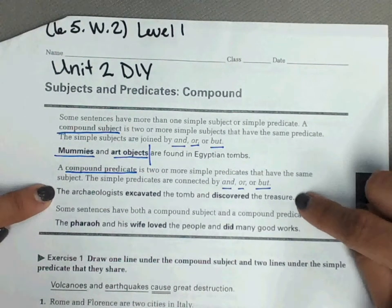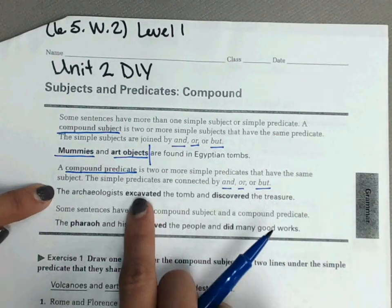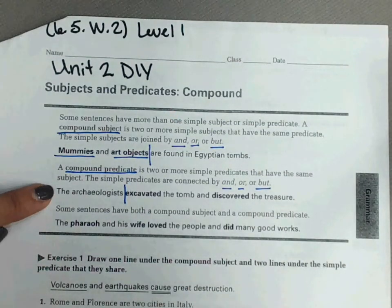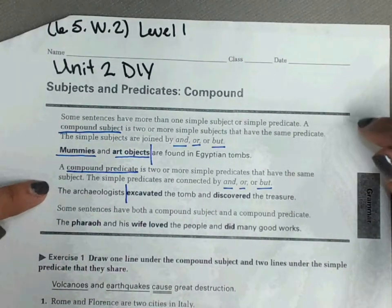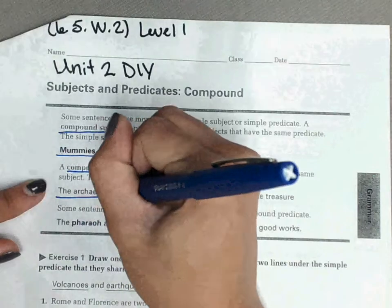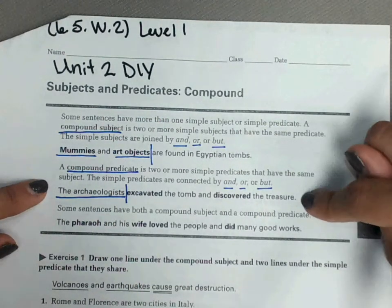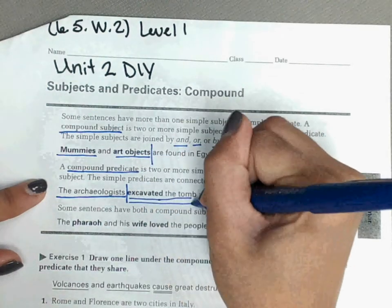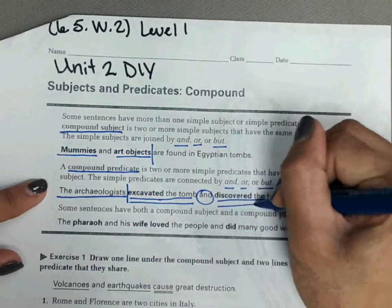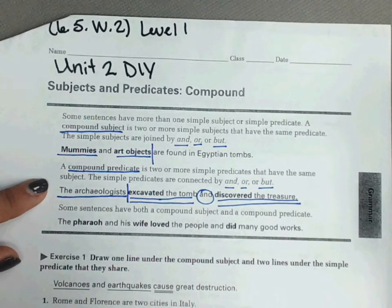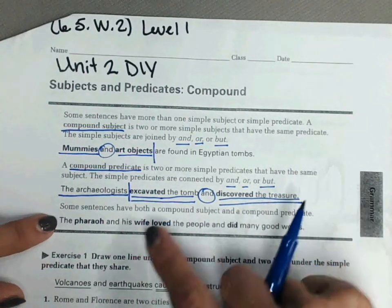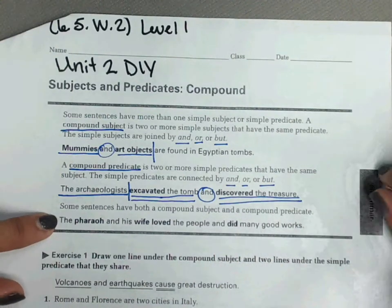Let's look at our example. Our first verb is 'excavated,' so we put our line right in front of the first verb. The subject is 'the archaeologist,' which is doing the actions. The two actions are 'excavated the tomb' and 'discovered the treasure.' Some sentences have both a compound subject and a compound predicate — meaning two subjects doing two different things.